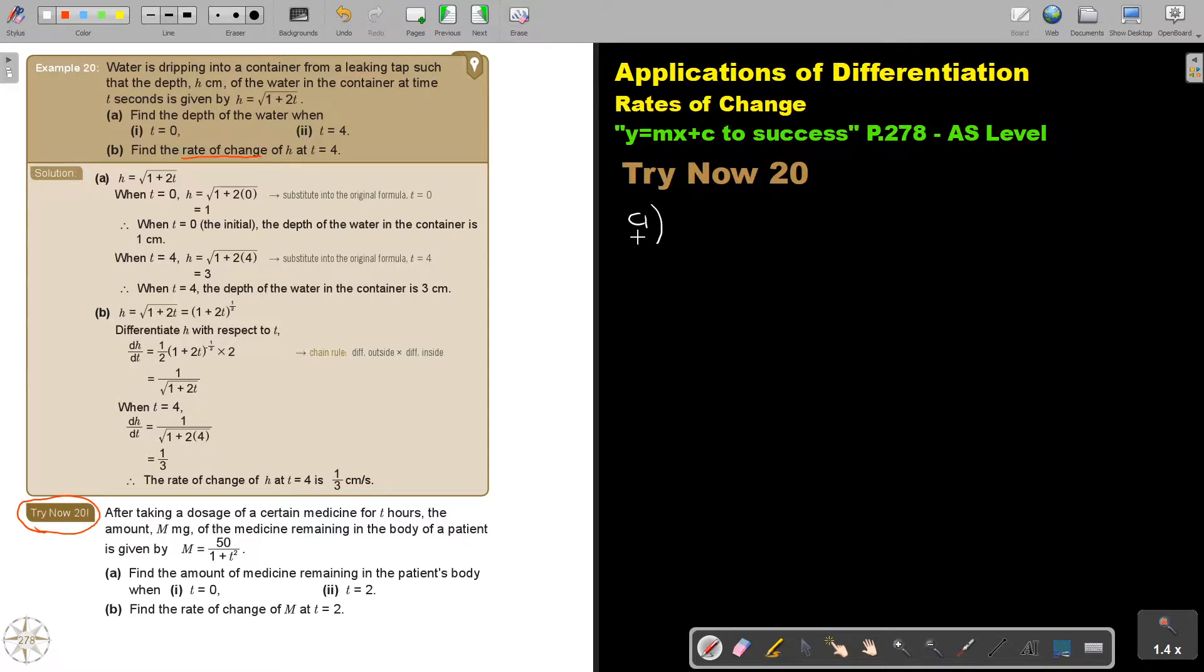Number A. After taking a dosage of certain medicine for t hours, the amount m milligrams of the medicine remaining in the body of a patient is given. There is the formula. I'm always looking first for my function. So what is my function? This is my function or my equation.